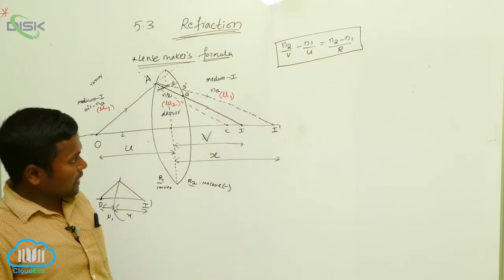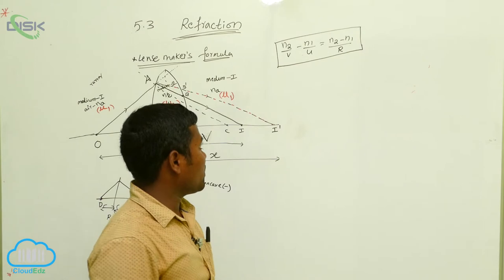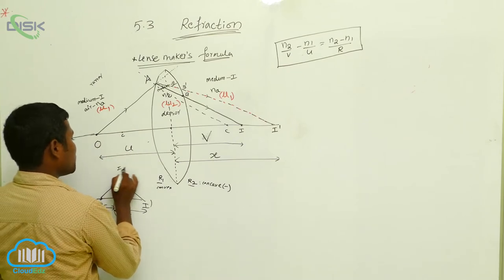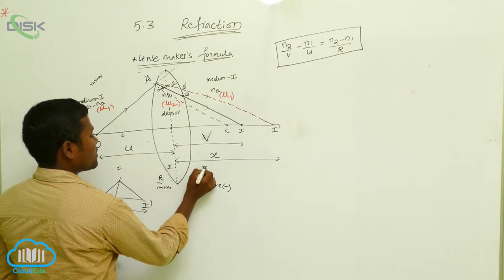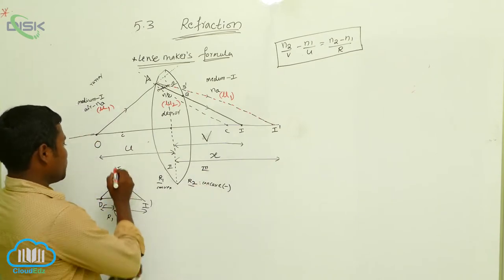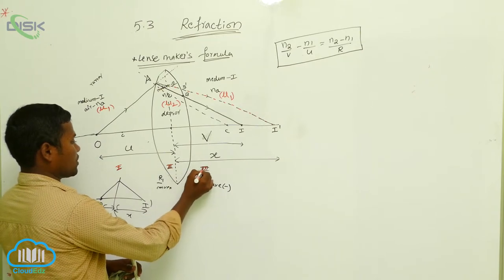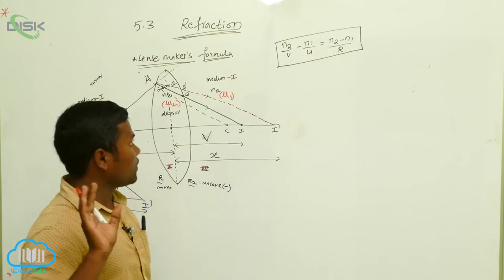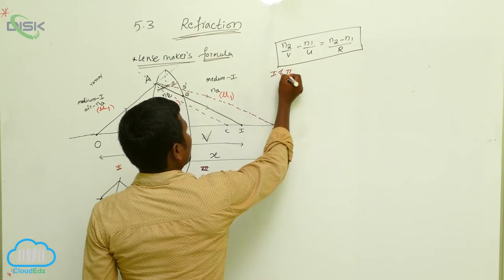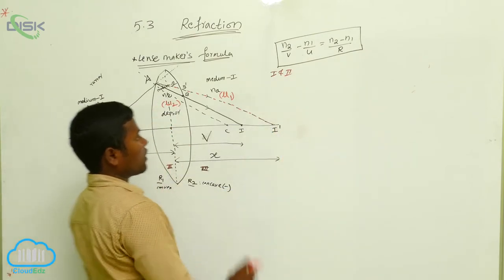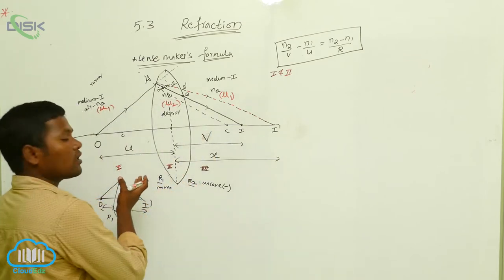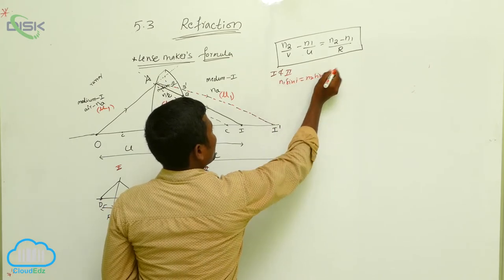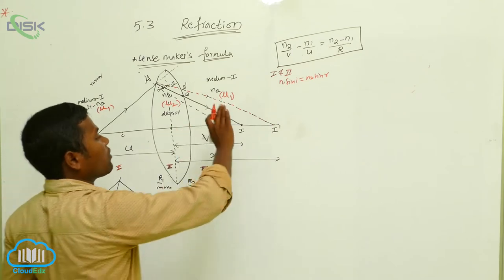This is one part, this is the second part, and this is the third part of the lens. For refraction to take place, how many mediums do you need? Definitely two mediums. So now we have the first medium and the second medium. For Snell's law: n1 sin i equals n2 sin r — but actually it is not required here, I have just written it for reference.